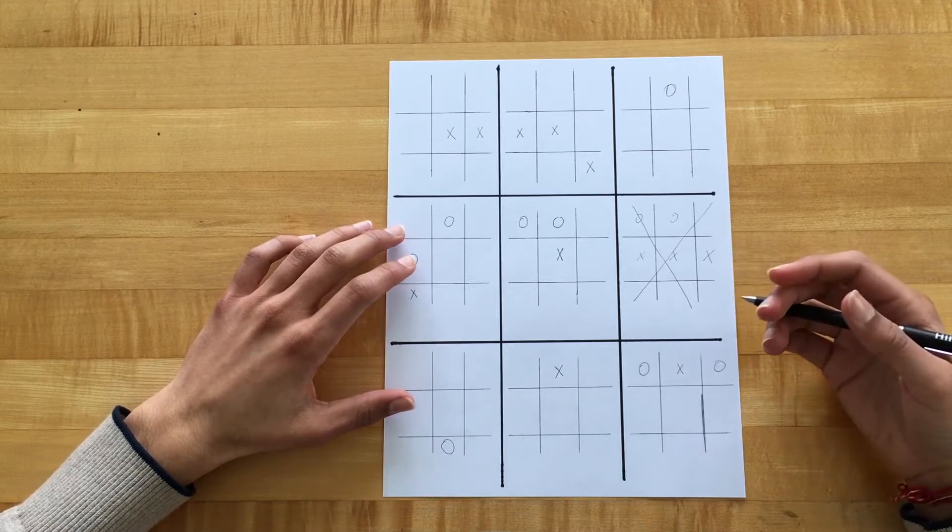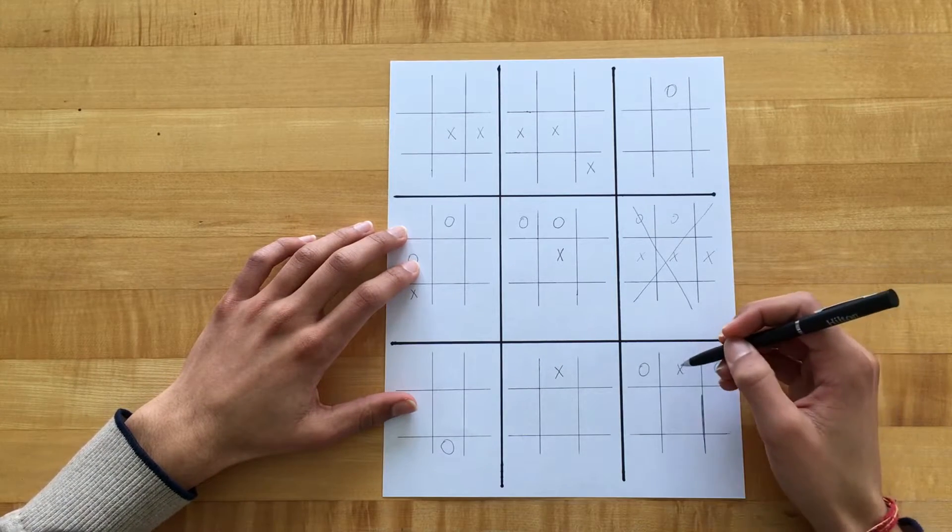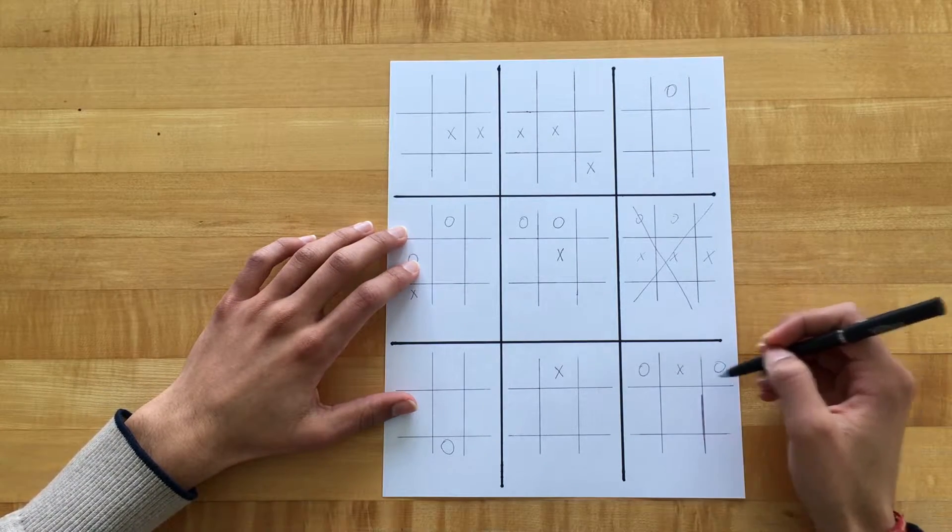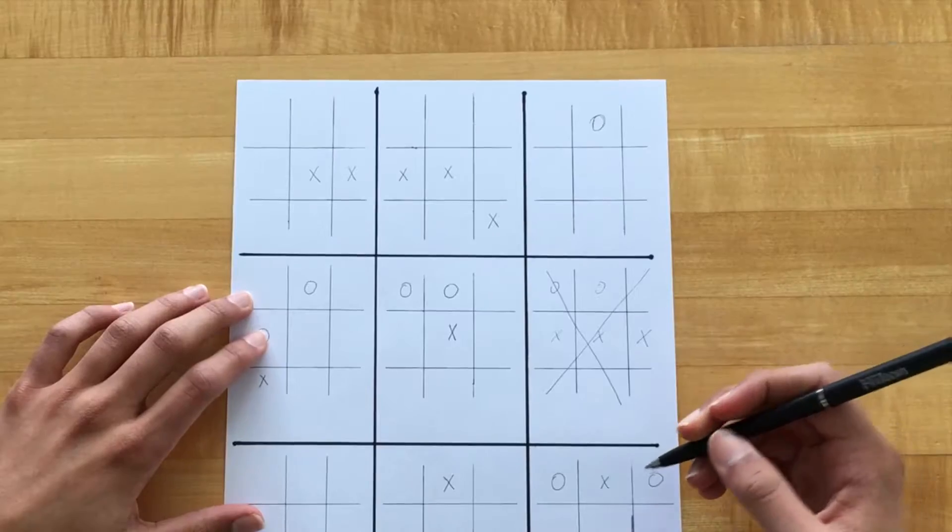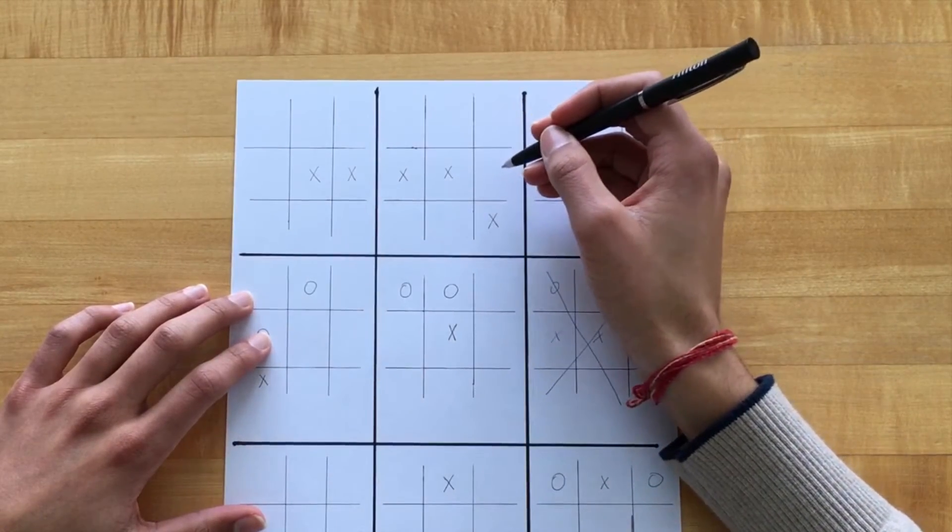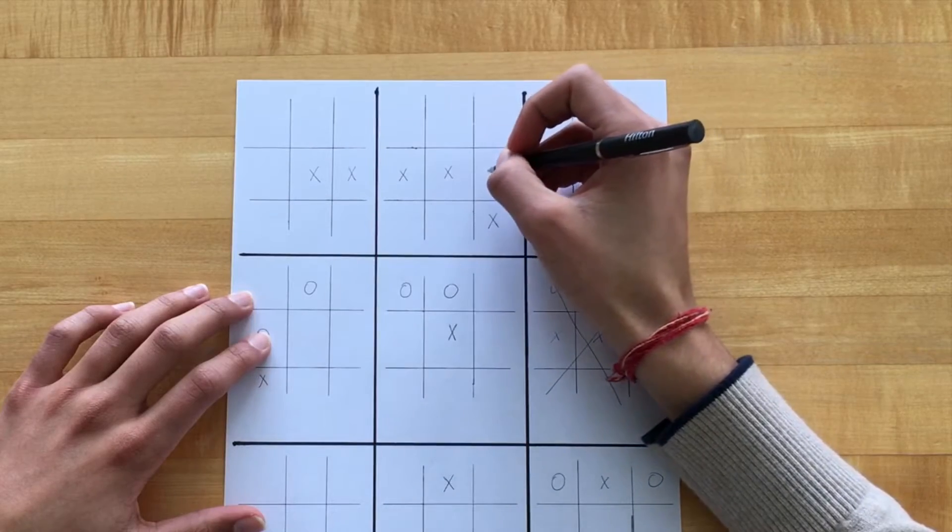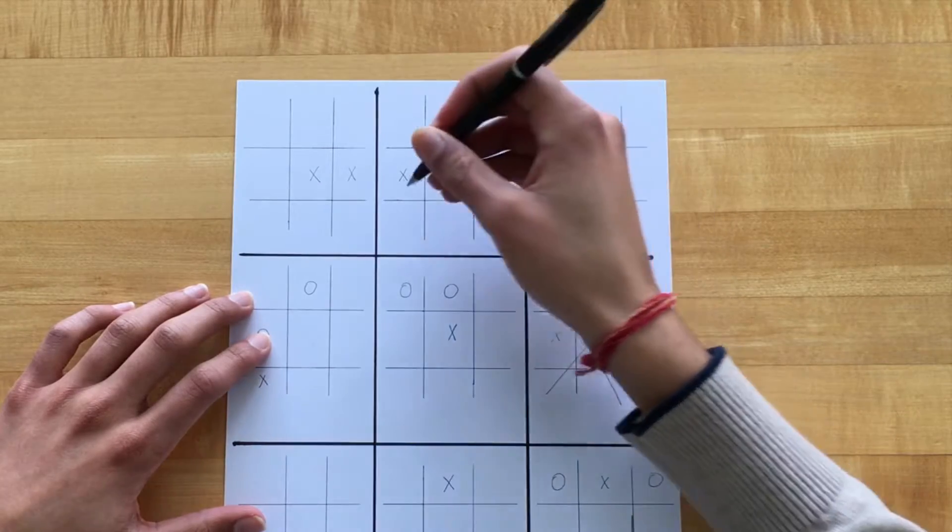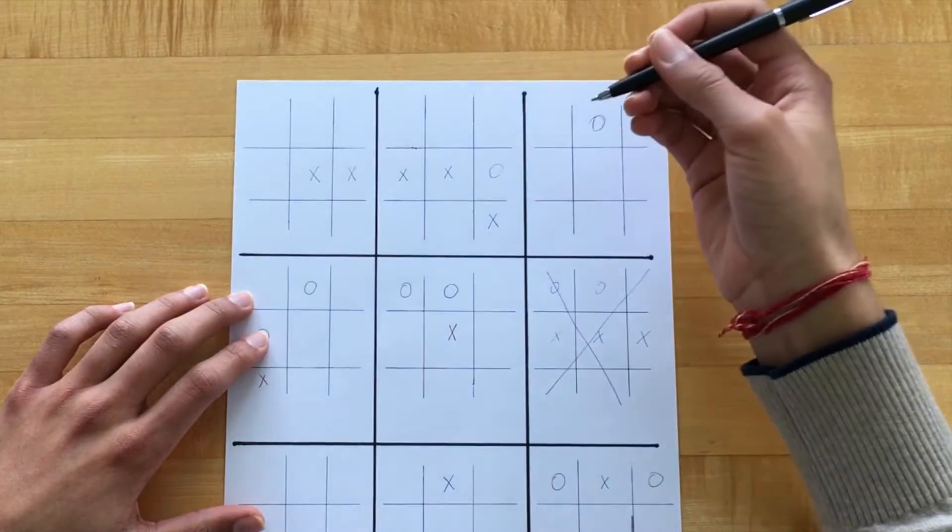So let's say the game has been going on for a while and X just placed over here because it wanted to block O from getting three in a row. So now O has to play on this board. Now O is most likely going to play over here because it wants to block X from getting three in a row on this board.